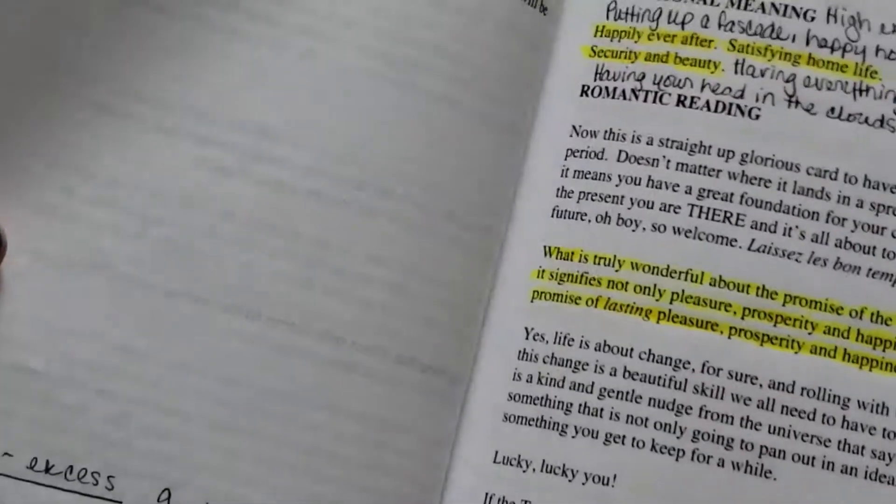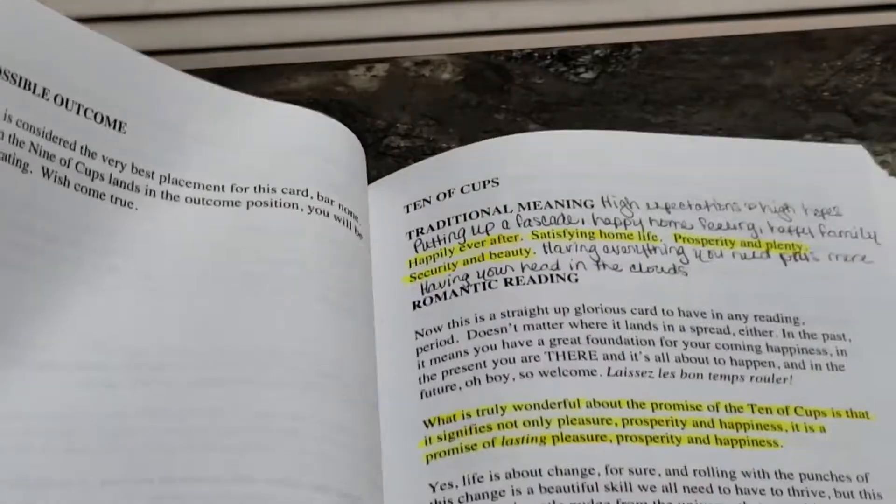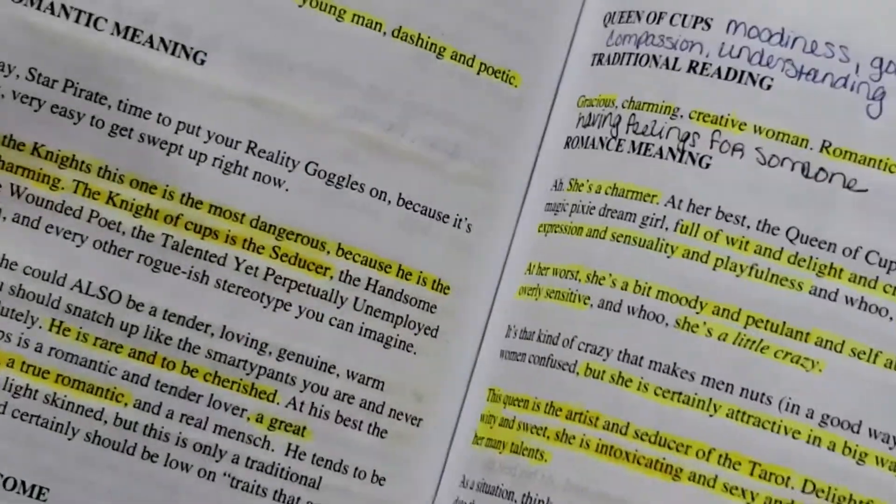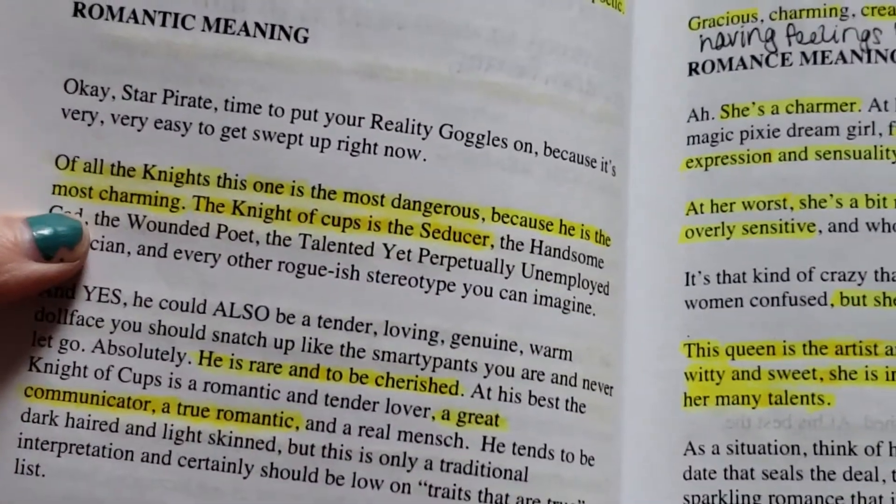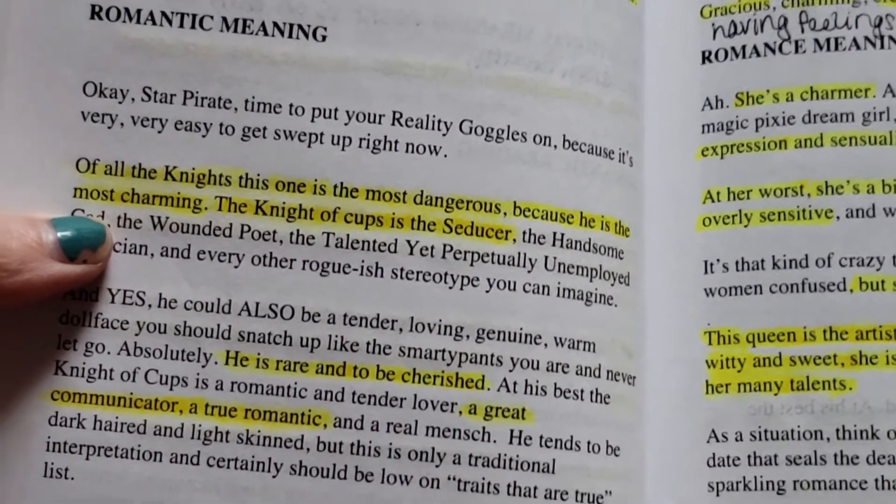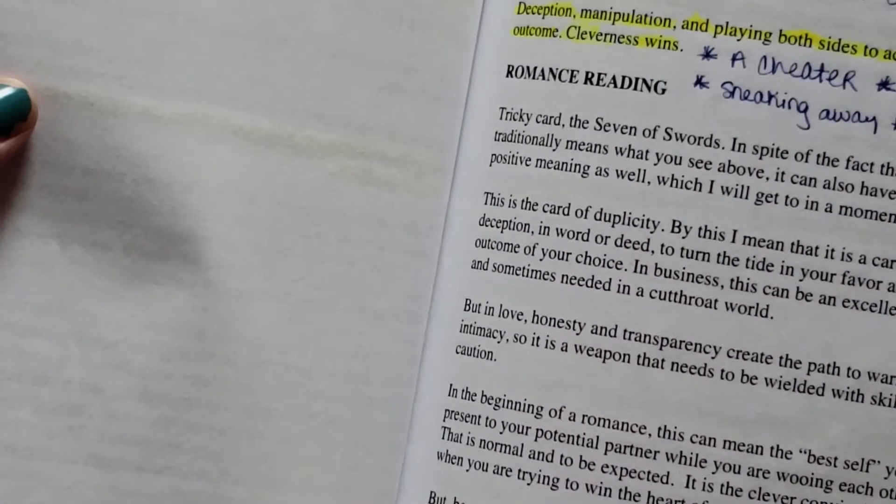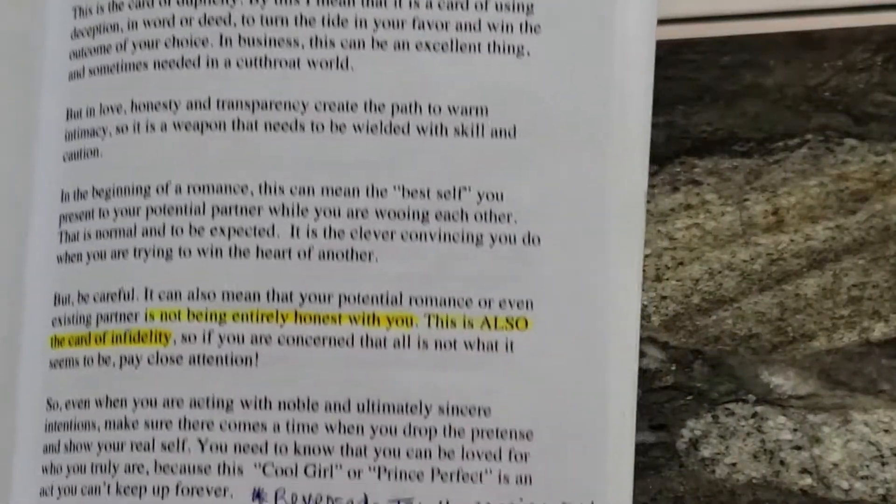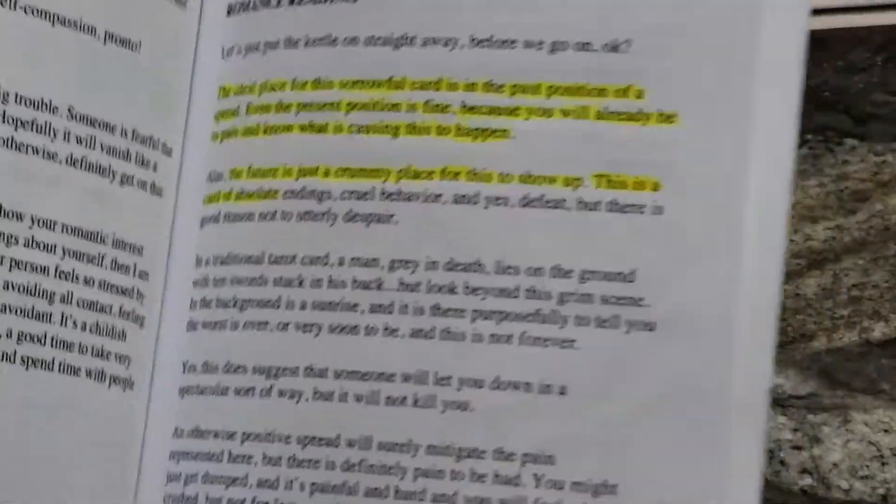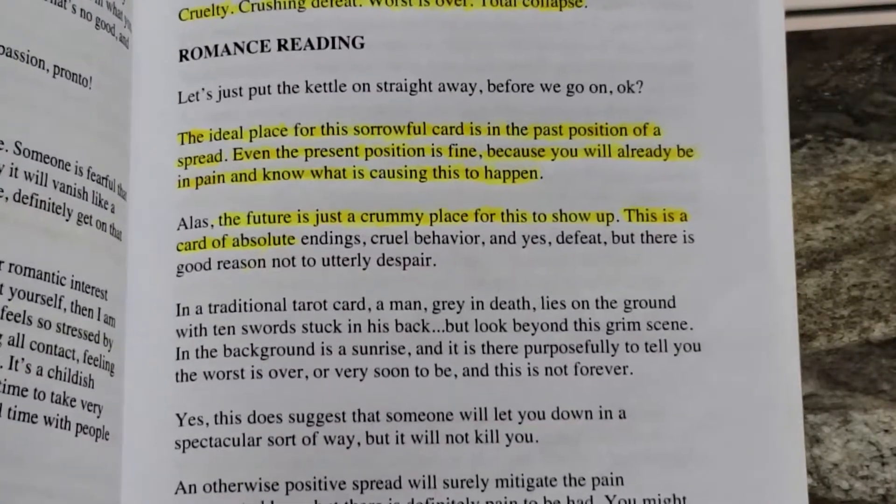How to deliver information gently to your clients if you are a reader. It also talks about, like in the court cards, it talks about personality and a little bit about that. Obviously, there's a lot of handwritten stuff in here. This book was gifted to me by somebody who had already, this isn't my stuff, this is notes from somebody else. But this book was gifted to me. For instance, Knight of Cups. Of all the knights, this one is the most dangerous because he is the most charming. He's the seducer. So basically, it just breaks it all down. It tells you exactly what to expect and how to read it if it's in a romantic reading.